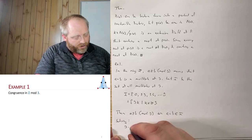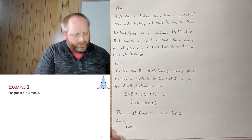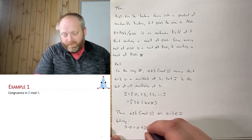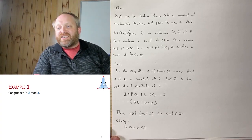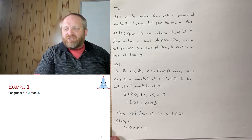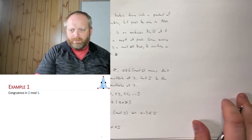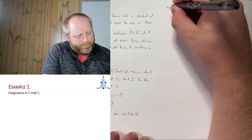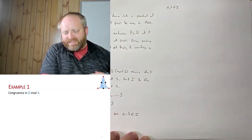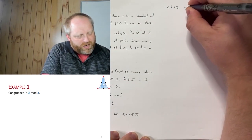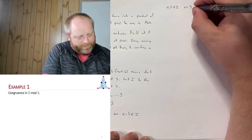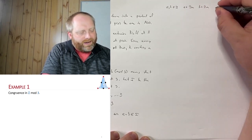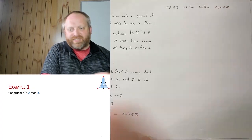For the subring test: 3 times 0 — since 0 is an element of Z — equals 0, and 0 is inside I. So I is not empty; it has the zero element. Now for subtraction and multiplication: let A and B be elements inside I. Since these are multiples of 3, we can write A equals 3M and B equals 3N, where M and N are elements of Z.